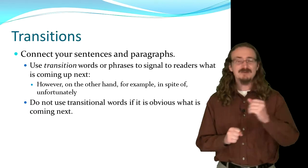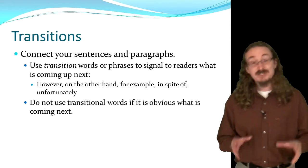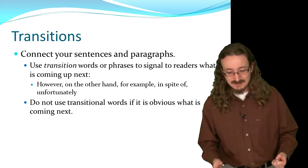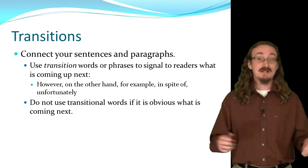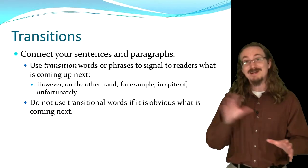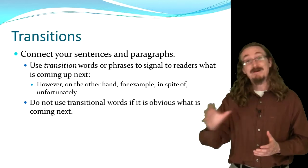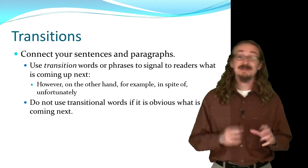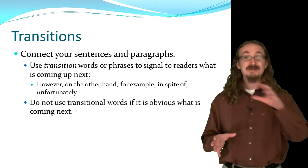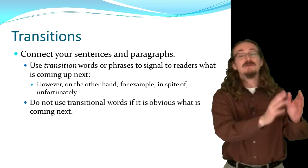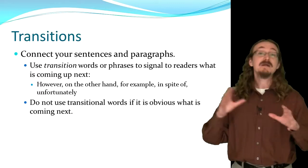Now let's talk about transitions — these are just signal expressions, signs if you will, that connect your sentences together and connect your paragraphs together. They're used to tell the reader what's coming up next. Words like first, second, third are a great way to organize something. If you are going to change direction, you can say 'however,' 'on the other hand,' 'for example,' 'in spite of what I just said,' 'unfortunately' — these are all little signs to the reader that something's about to happen. I think of transitions as signs on a highway: if you're driving and you see a sign for a sharp curve ahead, you know to slow down. Same thing with a word like 'however' — if you see it while reading, you know there's about to be a change.